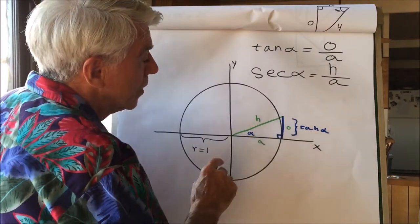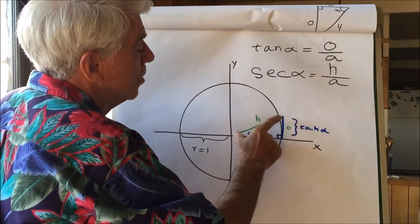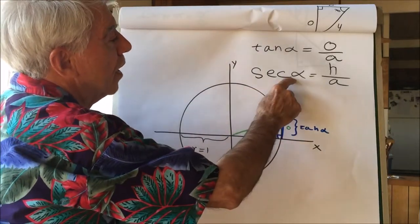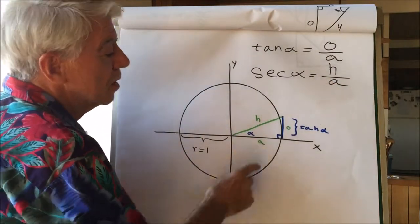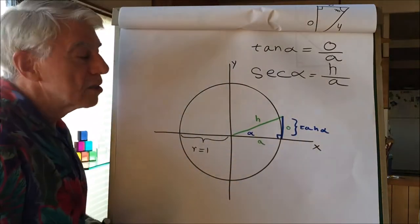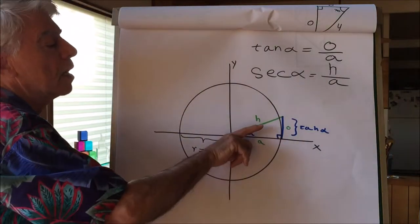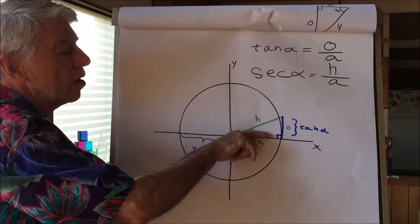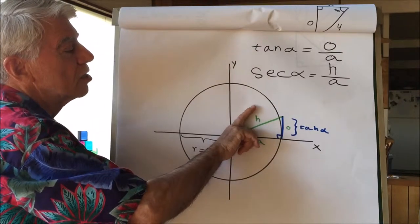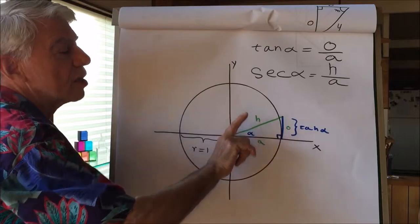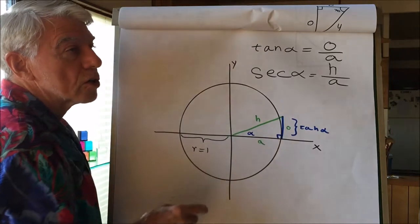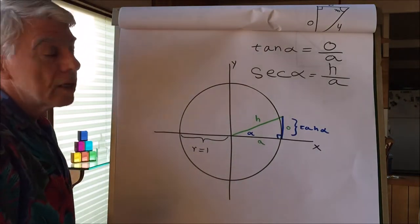Now let's take a look at this green line. This is the hypotenuse in a triangle where this angle is alpha. The secant of alpha is the hypotenuse divided by the adjacent. Again, if the adjacent is 1, the hypotenuse itself represents the secant. As this angle gets smaller and smaller, the secant will approach 1. As this angle gets larger and larger, the secant will get larger and larger. So the tangent goes from 0 to infinity; the secant goes from 1 to infinity.